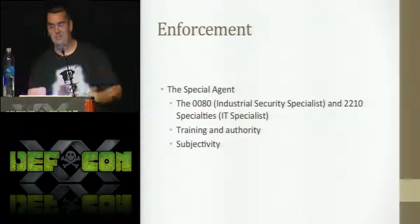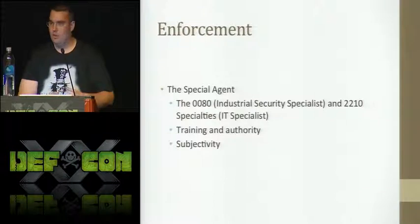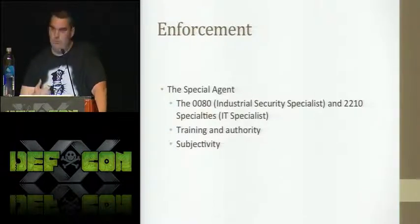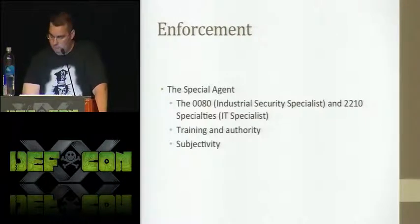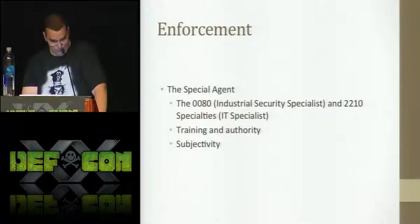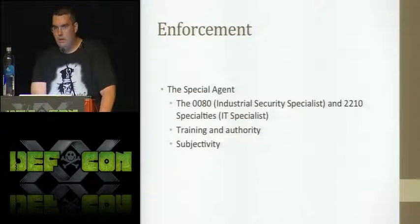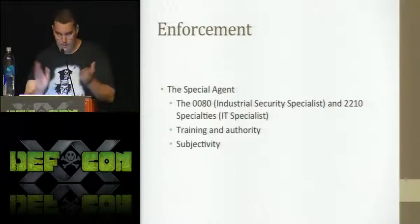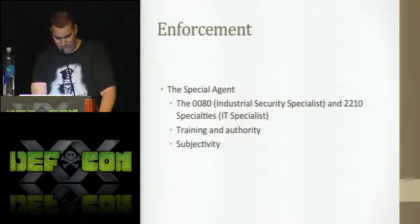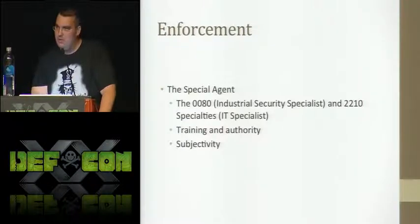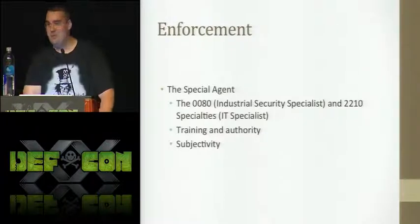I'm not trying to make this into a bash on the federal government. I just want them to adapt — there are great security controls out there, if they just used them it would work fine. Enforcement is done through a credentialed special agent — through a 0080, who handles physical security, and 2210s, which is what I was, IT specialist. When you get onboarded, they do a phone interview of about 10 questions — the one question that referenced Linux was 'how do I show running processes?' — and then I was a certified Linux guy. These special agents don't carry guns, they have no law enforcement authority. They just carry a badge, and the most we can do is throw it at somebody. The only cool thing was I got an undercover car, and when you get pulled over it was registered to the Attorney General of the State of Texas.